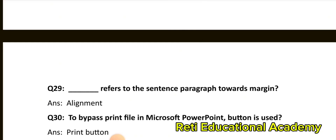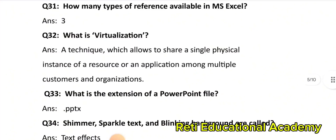Question number 30: To print a file in Microsoft PowerPoint, the Print button is used. Question number 31: How many types of references are available in MS Excel? The correct answer is: Three. Question number 32: What is virtualization? The correct answer is: A technique which allows sharing a single physical instance of a resource or an application among multiple customers and organizations.